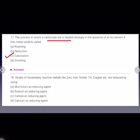18th question is: oxides of moderately reactive metals like zinc, iron, nickel, etc. are reduced by using carbon as a reducing agent. So students, that's it for this video.